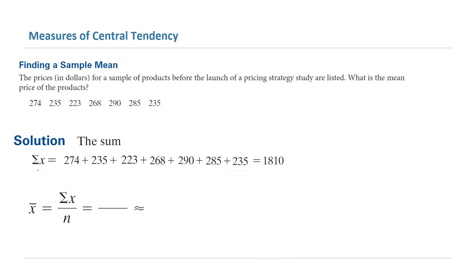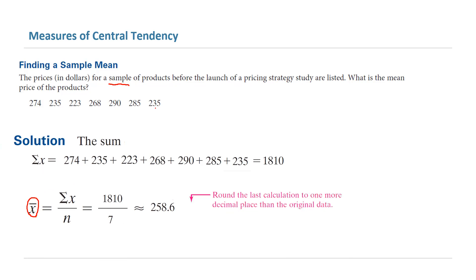In the next step, since you're dealing with a sample, take a look at the question. The question says we are working with a sample, so that's why you use x bar. The mean is equal to the summation of x values, which is 1810, divided by n. Counting the data points, we have 7. So when you do the division, it is 258.6.